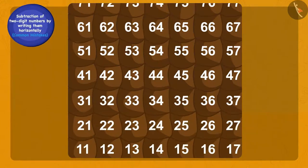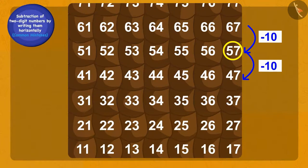Bholu first took one jump down from 67 on the grid and thus by subtracting 10, he reached 57. Now, he made another jump down and then subtracting 10 again. So, which number did he reach? 47! Absolutely correct!